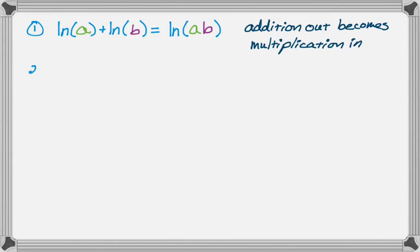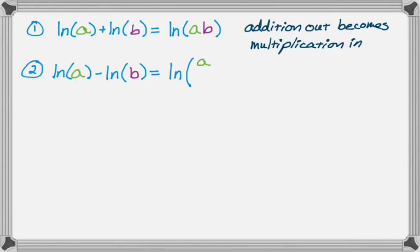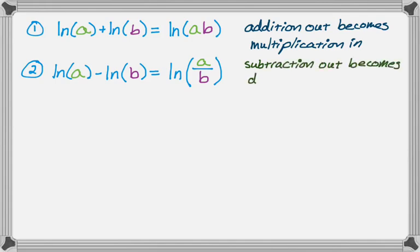There's a similar property for subtraction. The natural log of A minus the natural log of B is going to be the natural log of A over B — or A divided by B. The way I remember that is subtraction outside of the logs becomes division inside. And remember, this applies to every base; I happen to be using base E, which is why I'm writing natural log.